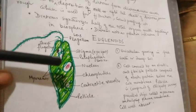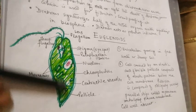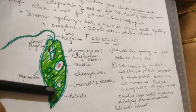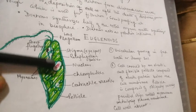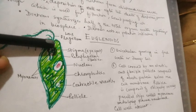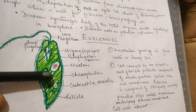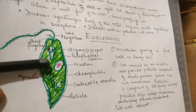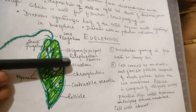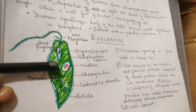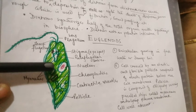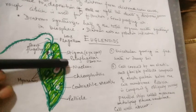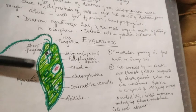Regarding reproduction, euglenoids mainly reproduce by binary fission along the longitudinal axis. Sexual reproduction is very rare. Most significantly, euglena's ability to perform both saprophytic and photosynthetic nutrition makes them very significant in evolutionary context, as they provide a link between plants and animals.